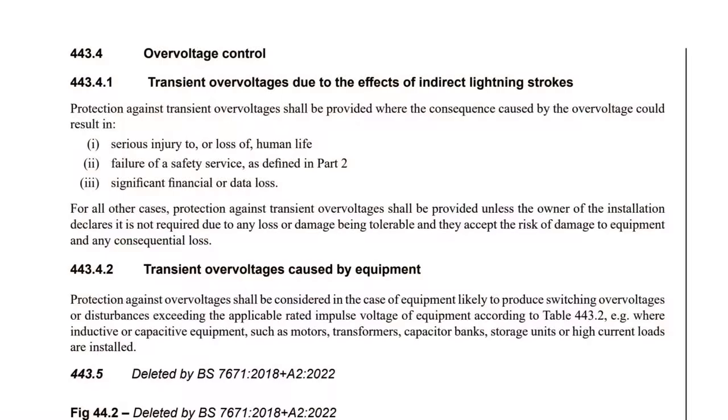Now regulation 443.4.1, which covers transient overvoltages due to the effect of indirect lightning strokes, states that protection against transient overvoltages shall be provided where the consequence caused by the overvoltage could result in: one, serious injury to or loss of human life; two, failure of a safety service as defined in part two; three, significant financial or data loss.